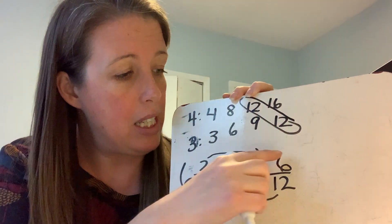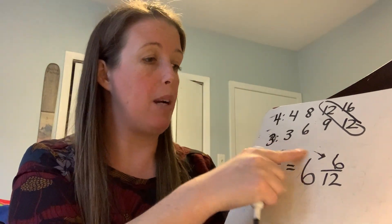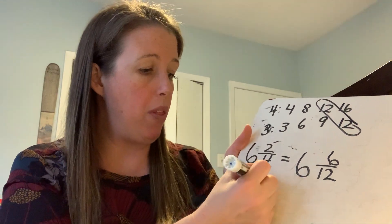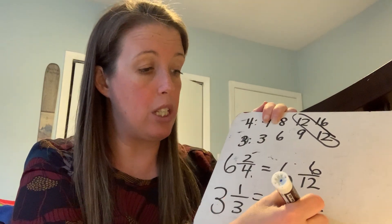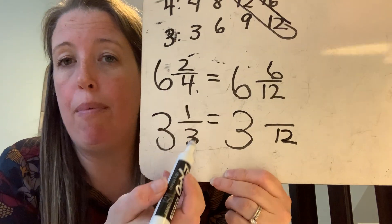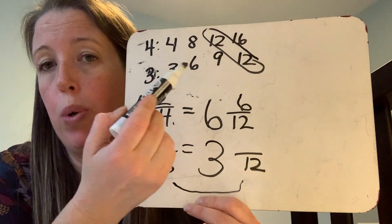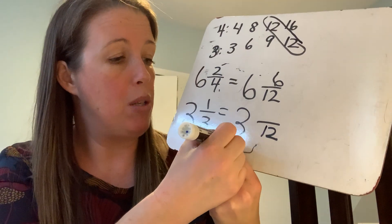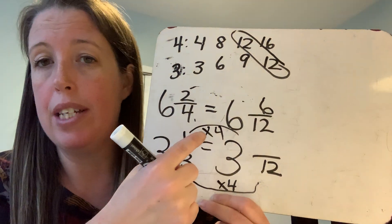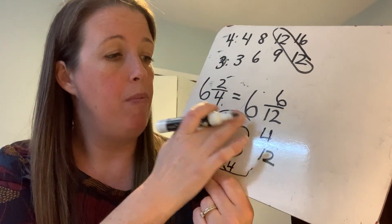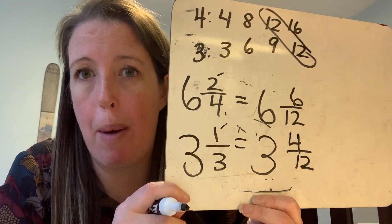So now I have six and six-twelfths, and I have to change my second mixed number. My second mixed number was three and one-third. I'll leave the whole number but change my thirds into twelfths. What did I do to my denominator of three to turn it into twelve? Three times four gave me twelve. So now I multiply my numerator one times four, and I get four. My new fractions are equivalent, so the value of these numbers doesn't change.